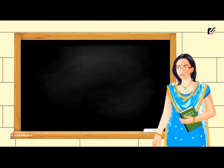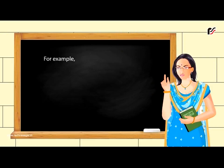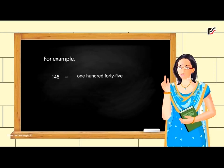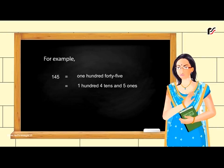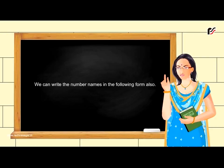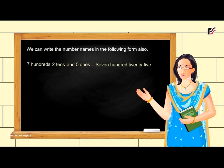Number names: the numerals written in words are called number names. For example, 145 is read as one hundred forty-five. It represents one hundred, four tens, and five ones. We can write the number names in the following form also: seven hundreds, two tens, and five ones is equal to seven hundred twenty-five.